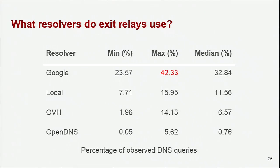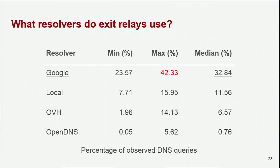Here are the results of our experiment. In this table, we show the minimum, maximum, and median percentages of DNS requests that the top four most popular resolvers could observe during the eight months of our experiment. In second place, we have exit relays that do their own resolution — what we mean by the word 'local' — representing around 12% of queries coming out of TOR on average. In first place, Google's public 8.8.8.8 resolver sees around one third of DNS queries coming out of TOR on average, and at times this number grew to over 40%. This finding is significant because it is alarming that one organization is getting to learn so much about TOR users' behavior.